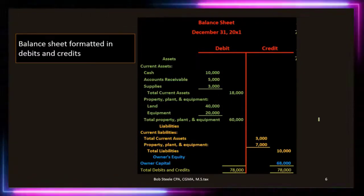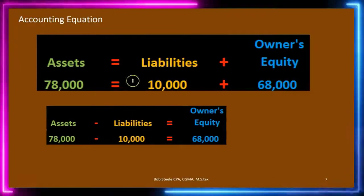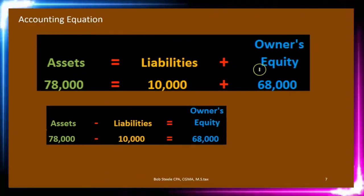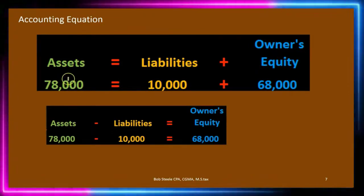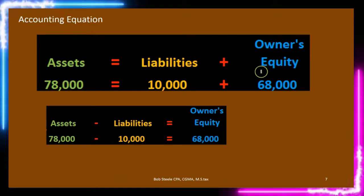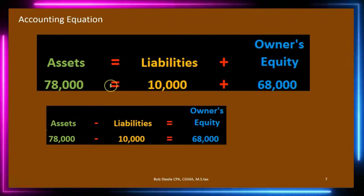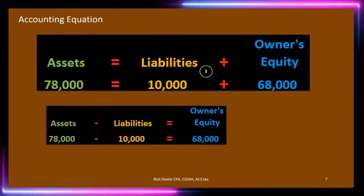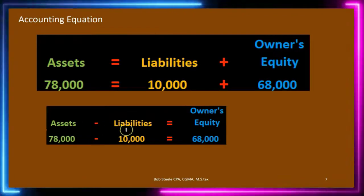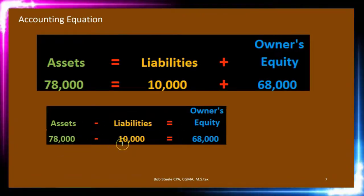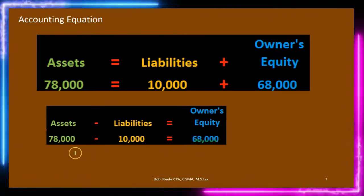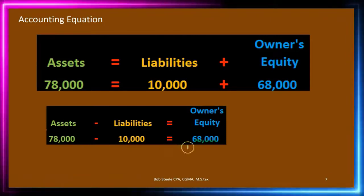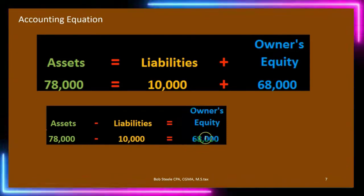The balance sheet contains all the components of the accounting equation: assets equal liabilities plus owners equity. We can also write that equation algebraically — subtracting liabilities from each side gives us assets minus liabilities equals owners equity. This is useful because it tells us owner's equity is the book value. If the company has $78,000 and owes someone else $10,000, then owner's equity is $68,000. The owner theoretically could sell the business and walk away with $68,000.